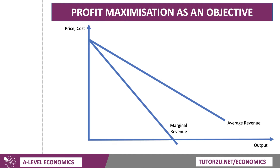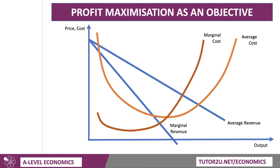So let's just work through the diagram together. Here's a downward sloping demand curve — the average revenue curve — with marginal revenue falling below it, as you will have covered in your theory of the firm. Simply impose some cost curves on: we have the marginal cost and average cost curves.